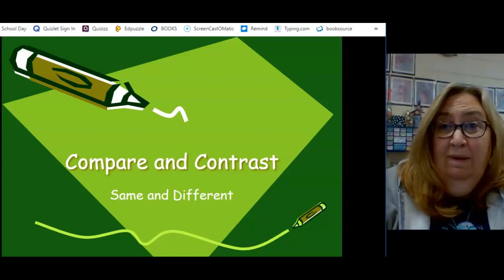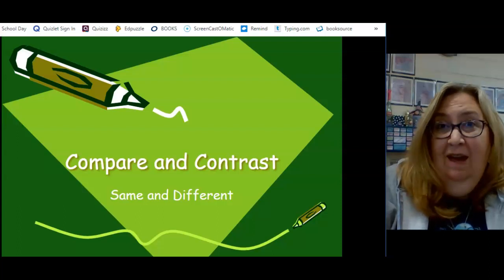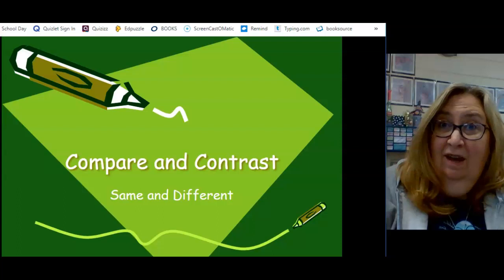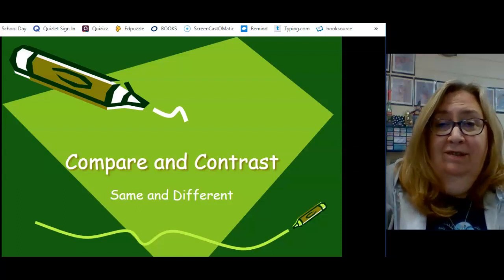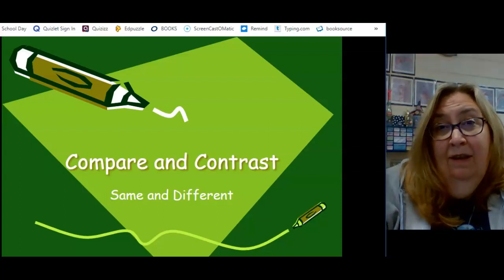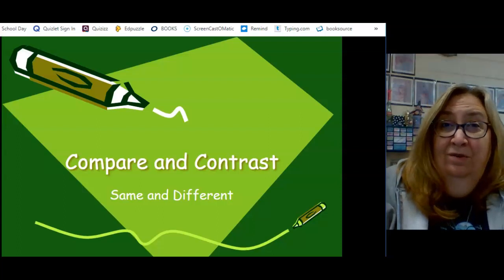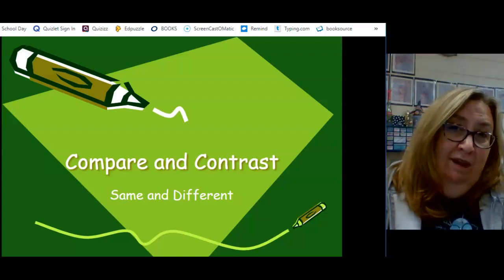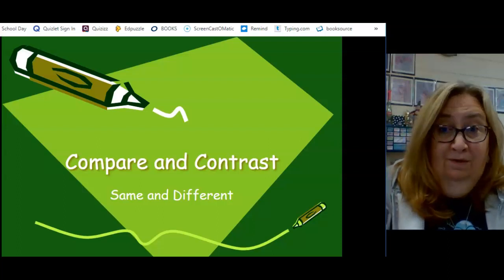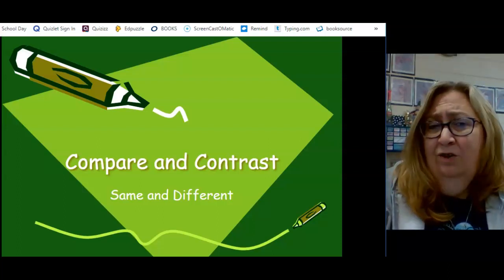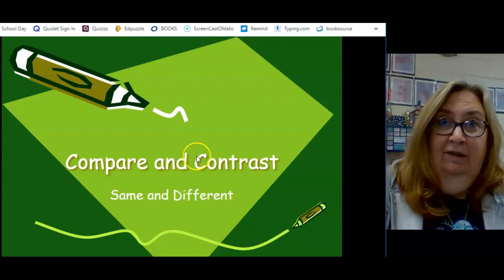In our last lesson, we talked about text structure, and we looked specifically at cause and effect, how one event causes another event or causes a reaction to happen. Today, we're going to be talking about comparing and contrasting. We can compare and contrast two different types of text, or we can compare and contrast within one text, and we're going to be talking about both of those today. This is going to be pretty simple, and it should be a review for you. This should not be the first time you've heard about compare and contrast.